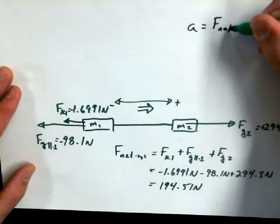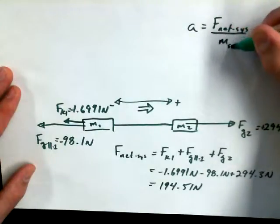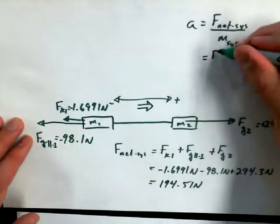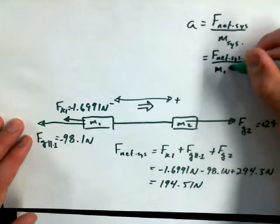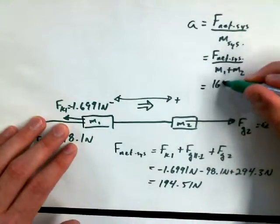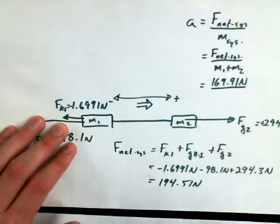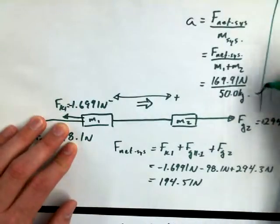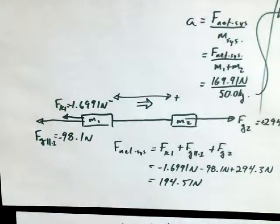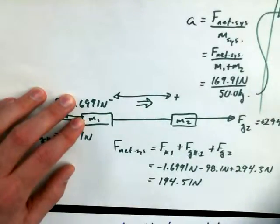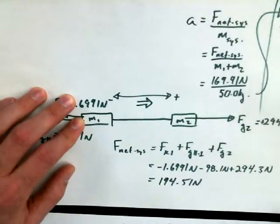And if I know the net force, then I should be able to find the acceleration of the system. Acceleration equals F net for the system divided by the mass of the system. In this case, the system isn't just one mass or the other mass. It's both masses combined. So I'm talking about F net for the system divided by mass 1 plus mass 2. We can't forget that there are two masses in play in this problem. Or 194.51 newtons divided by 50.0 kilograms. The acceleration for the system should be 3.89 meters per second squared. Beautiful.